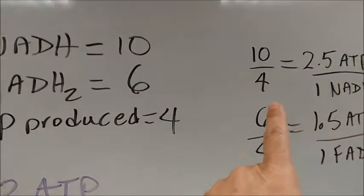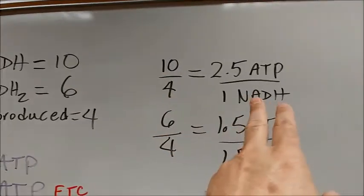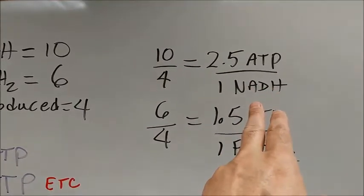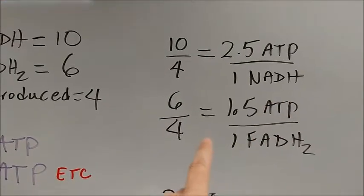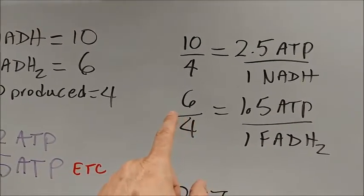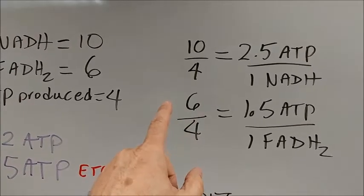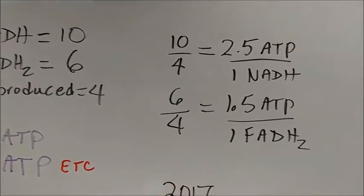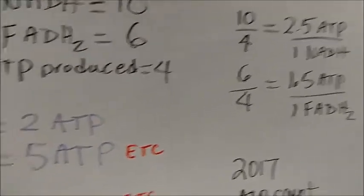So when we take these numbers — 10 for NADH divided by 4 — we get 2.5 ATP produced per NADH in the electron transport chain. For the FADH2s, the riboflavones, we get 6 divided by 4, which is 1.5 ATP per FADH2.